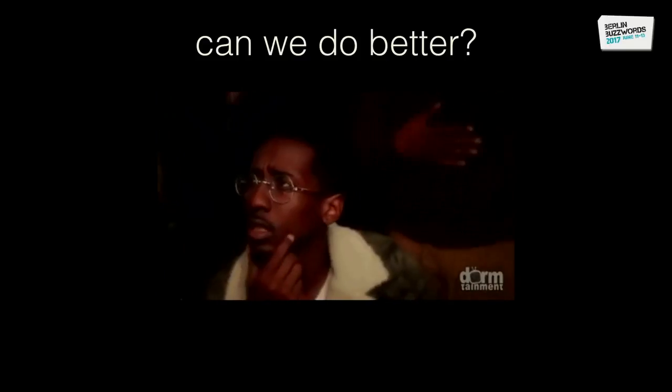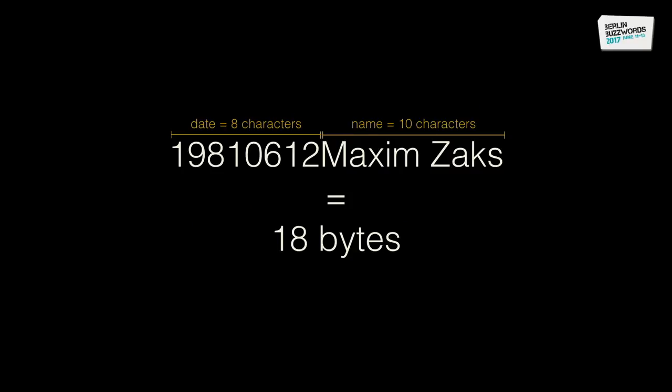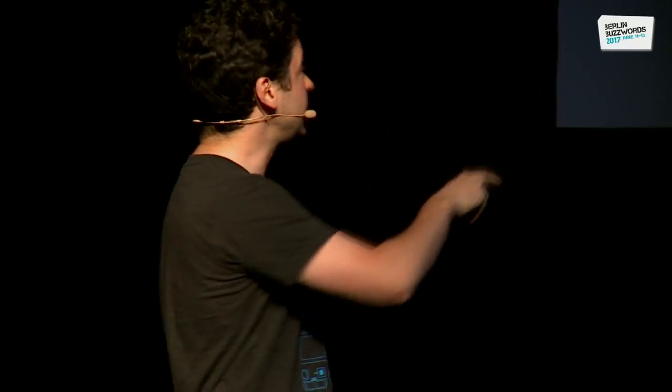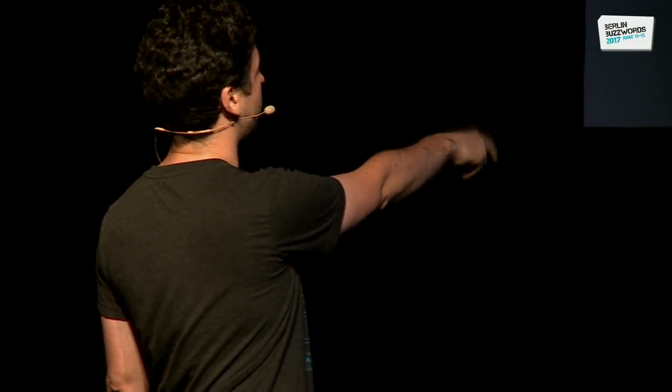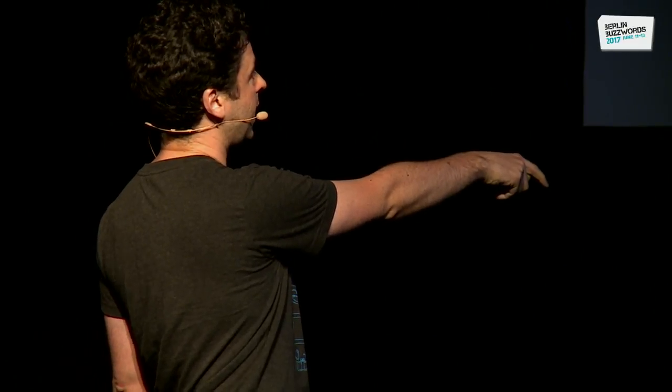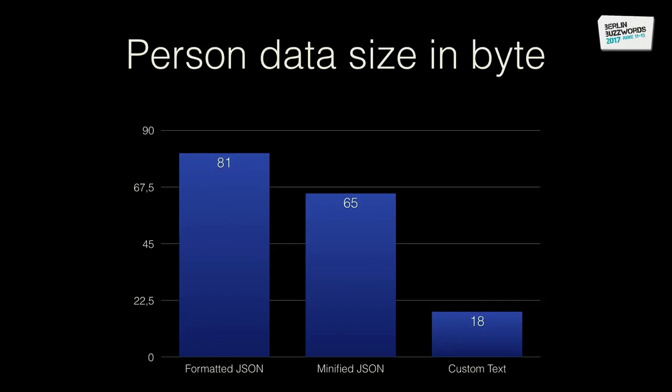So can we do better? What is the core thing we're trying to communicate with this JSON? Basically just the date and the name. The date is eight characters, the name is ten characters — 18 bytes in total. I didn't even introduce a delimiter, because dates can always be represented in eight characters; I know the first eight characters are the date and everything after is the name. No comma or empty space needed. Formatted JSON: 81 bytes, minified JSON: 65 bytes, custom text: 18 bytes — a huge difference.